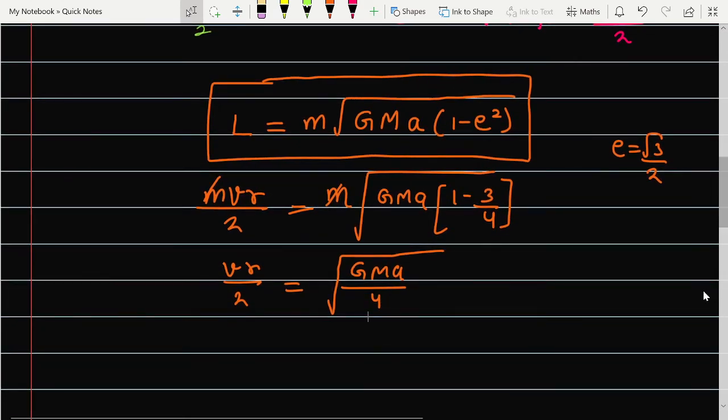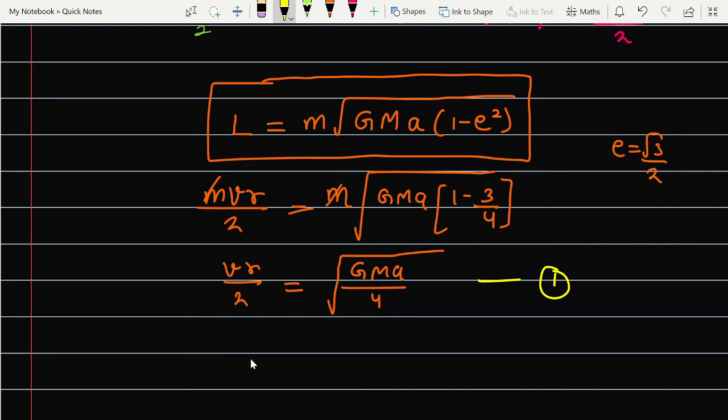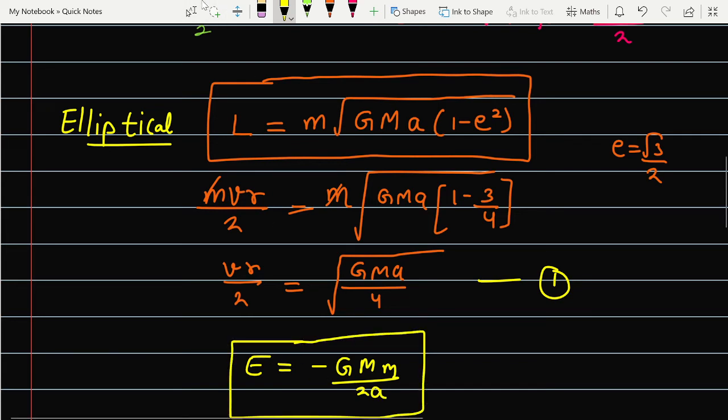Now we know that the energy of elliptical orbit is only depending on the semi-major axis. This is called equation 1. The energy of elliptical orbit - remember, I will provide all the circular elliptical formulas in the next video - for elliptical, the energy is minus GMm upon 2a.